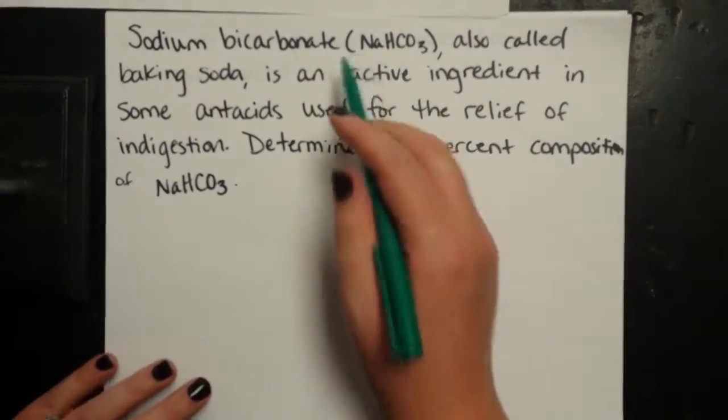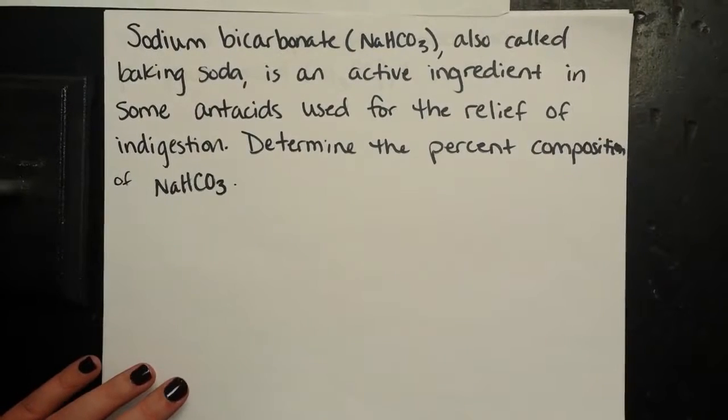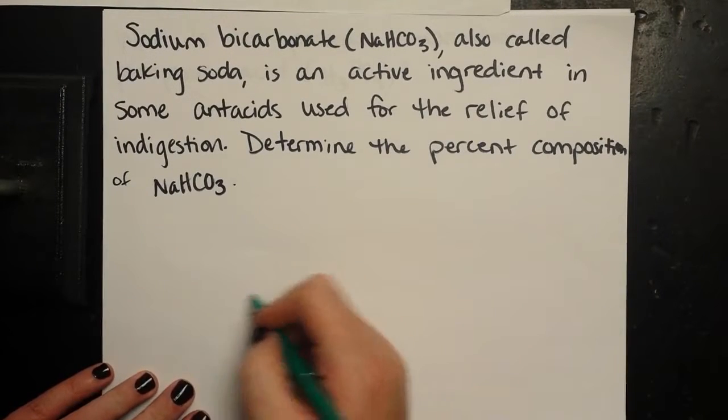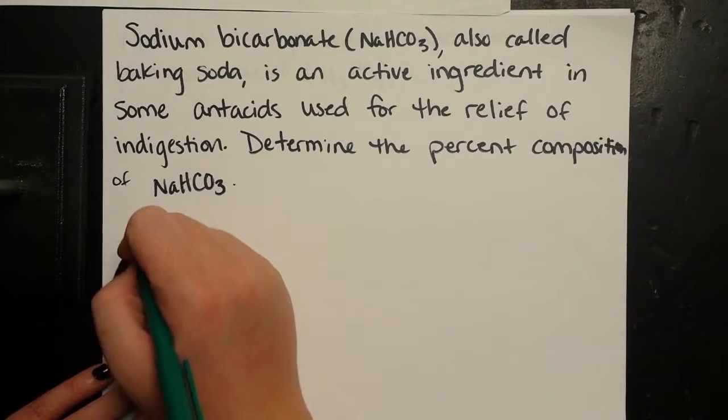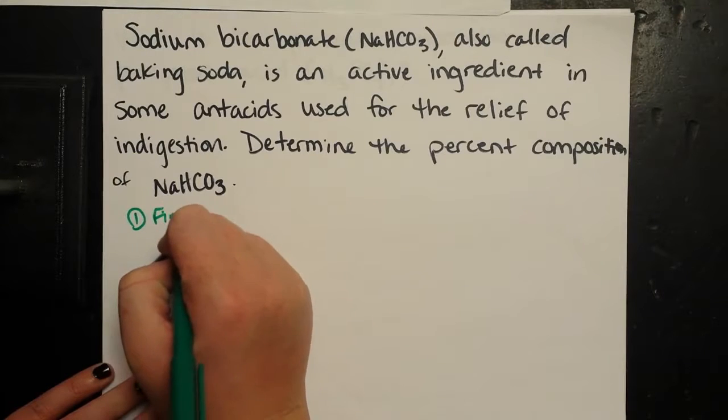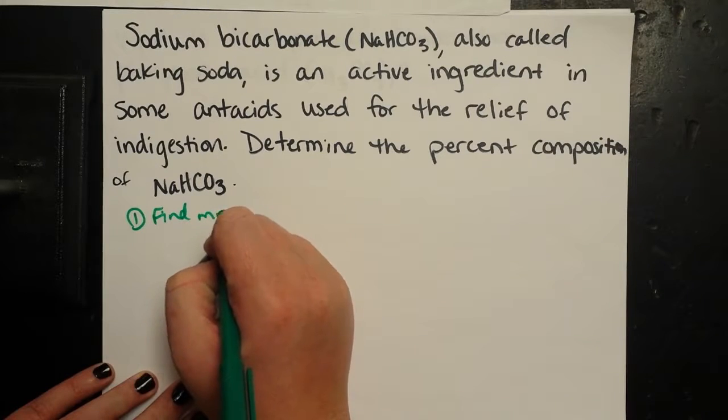So I'm going to assume that I've got one mole of sodium bicarbonate or NaHCO3. First I'm going to find the molar mass. So step one, find molar mass. Go ahead and write that out.